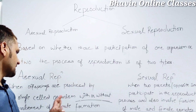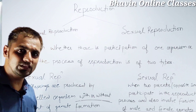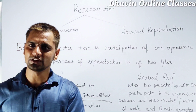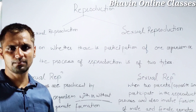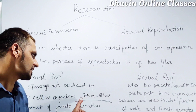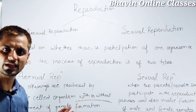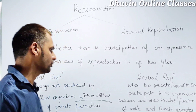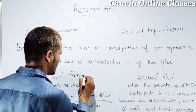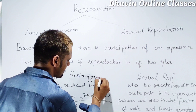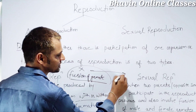The NCERT definition states that when offspring are produced by a single parent with or without involvement of gamete formation, it is asexual reproduction. When we read 'with or without,' it means that gamete formation may occur, but there is no fusion of gametes. Fusion of gametes is not happening. If there is a fusion of gametes, then it becomes sexual reproduction.